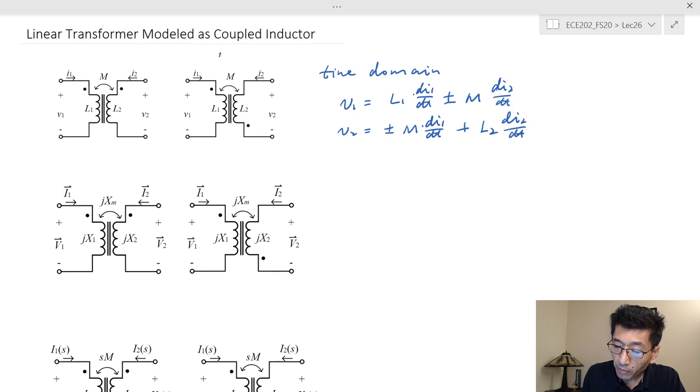So this is for the minus case, this is for the plus case, because they both currently go flowing into the dotted terminal and their fluxes will add up, and otherwise they're going to be subtractive for each other.